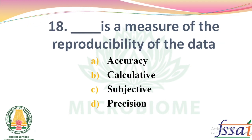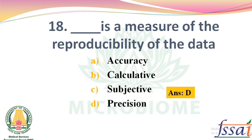Dash is the measure of reproducibility of the data. Options: Accuracy, Calculative, Subjective, Precision. The right answer: Option D, Precision.